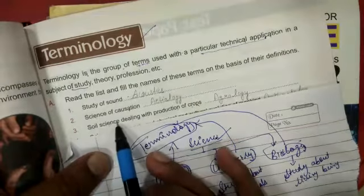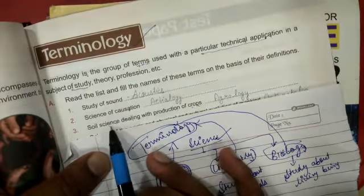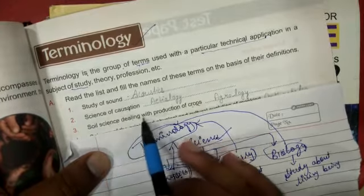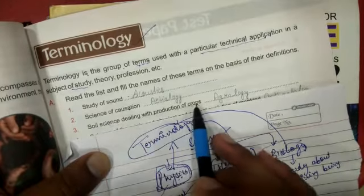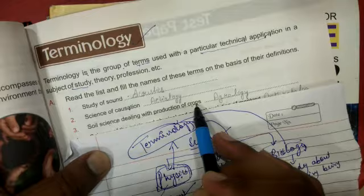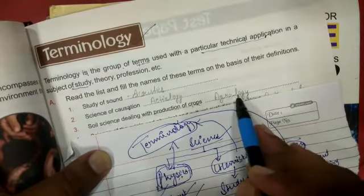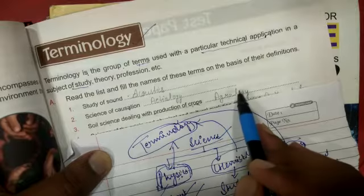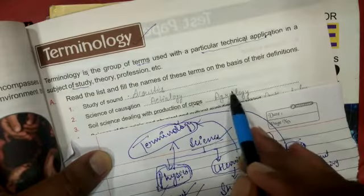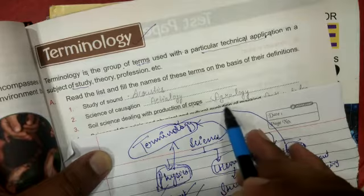The next one, soil science, which deals with the production of crops like how crops will be grown and everything, that is called agrology. As the name agro comes from agriculture.